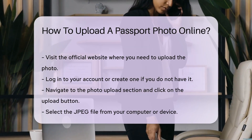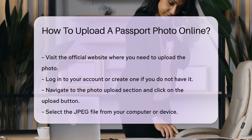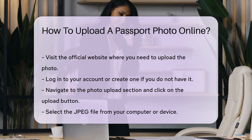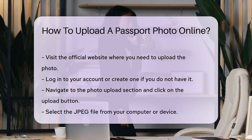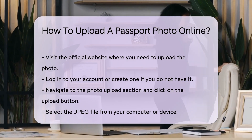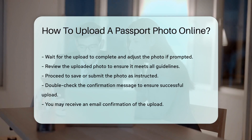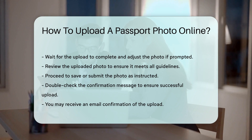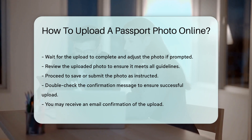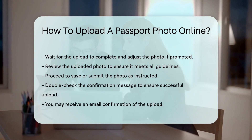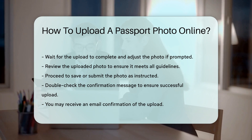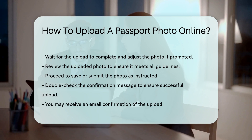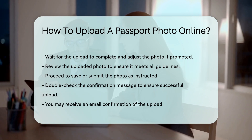Click on the upload button and select the JPEG file from your computer or device. Ensure the file is the correct one before uploading it. Wait for the upload to complete — the system may prompt you to crop or adjust the photo to fit the required dimensions. Review the uploaded photo to ensure it meets all the guidelines. If everything looks correct, proceed to save or submit the photo as instructed. Double-check the confirmation message to ensure the photo has been uploaded successfully. You may receive an email confirmation as well.